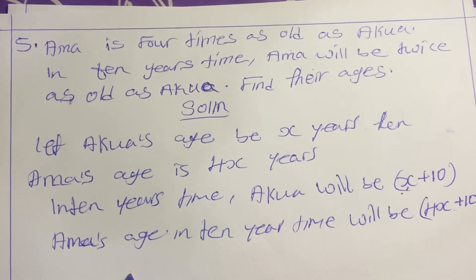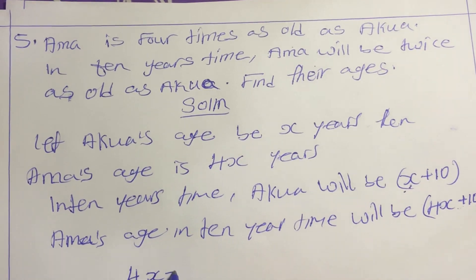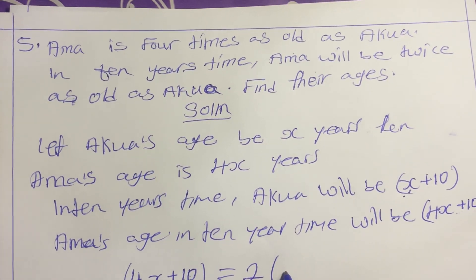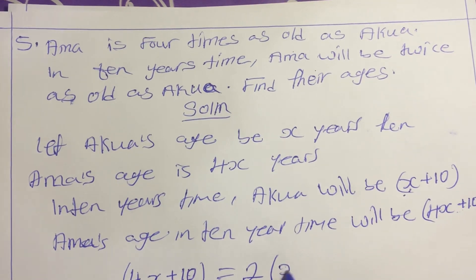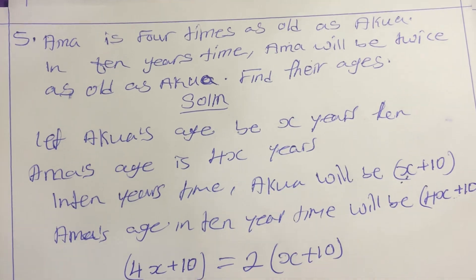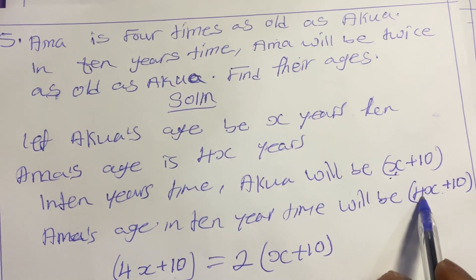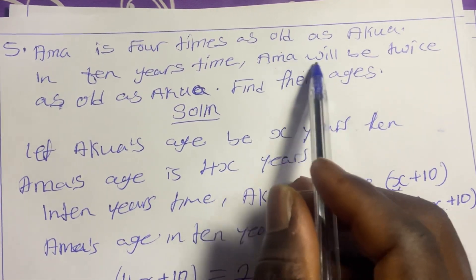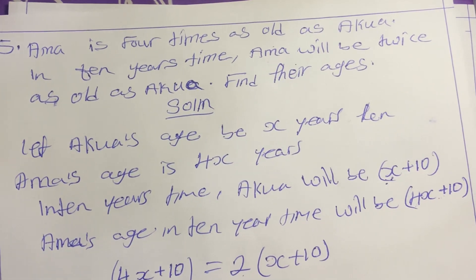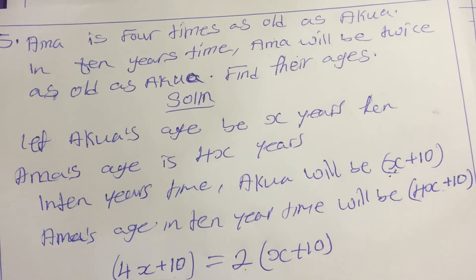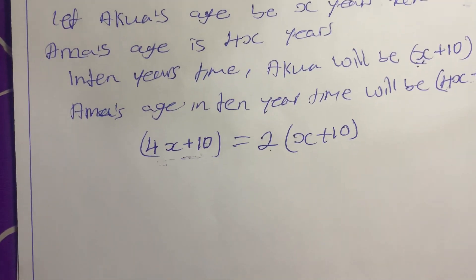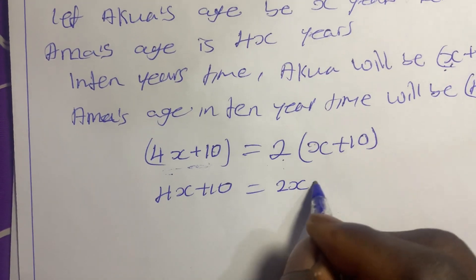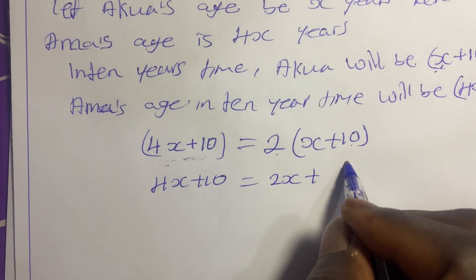Expand the bracket: 4x plus 10 equals 2 times x giving 2x, plus 2 times 10 giving 20. So the equation is 4x + 10 = 2x + 20. Group like terms: bring 2x to the left to get 4x minus 2x, and move 10 across to the right to become negative 10. So 2x equals 20 minus 10, which is 10.